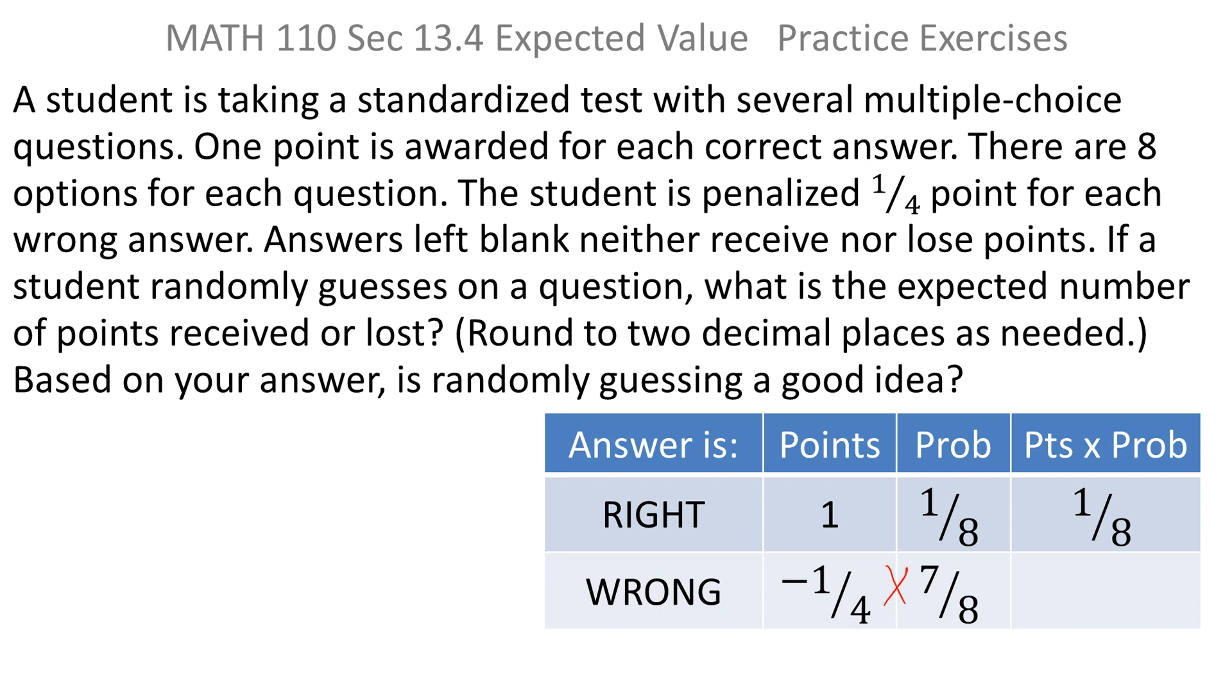And you take minus a fourth times seven-eighths, which is negative seven thirty-seconds. Now you want to add those together.